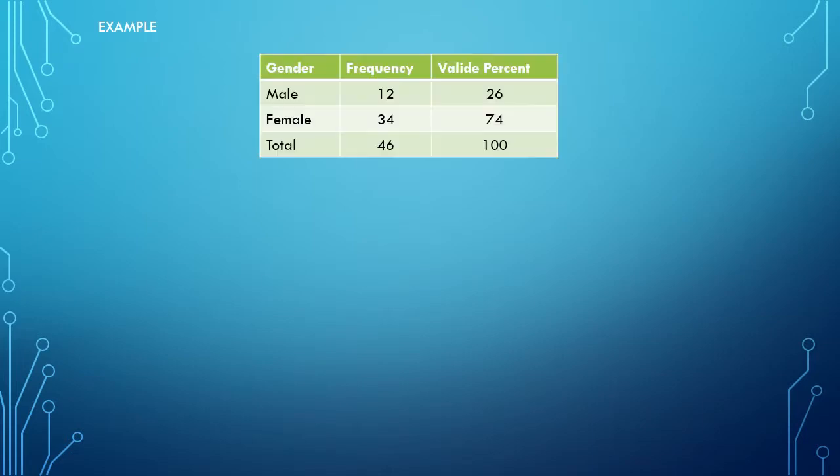I'll be using the example I've been using also for the previous segments, the gender example. So 12 people identified as male and 34 as female, which comes down to 26% male and 74% female.